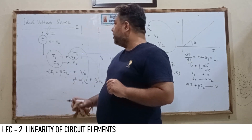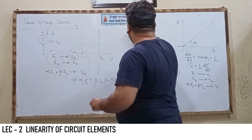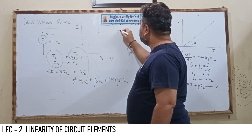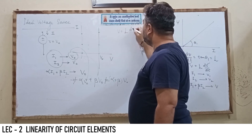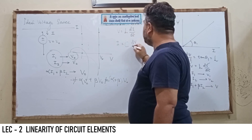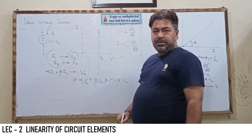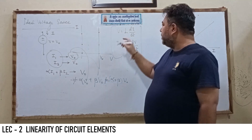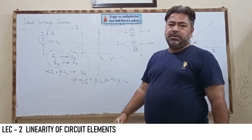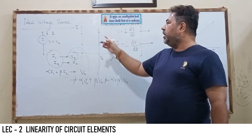Some students have confusion: we wrote v equals L·di/dt and i equals C·dv/dt — these might look non-linear, but it has already been proved that these relations represent a linear inductor and a linear capacitor respectively. It is not a linear voltage source.